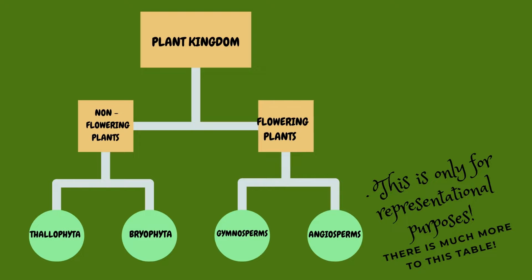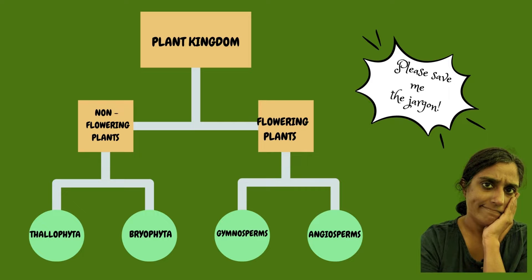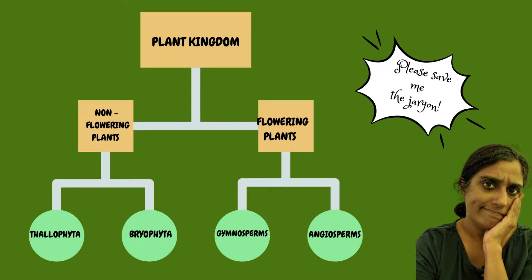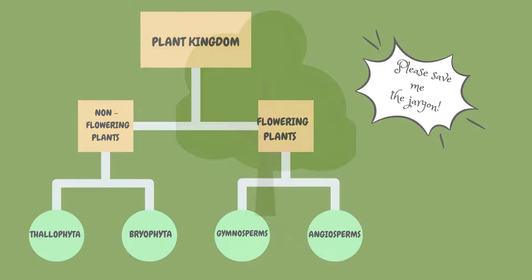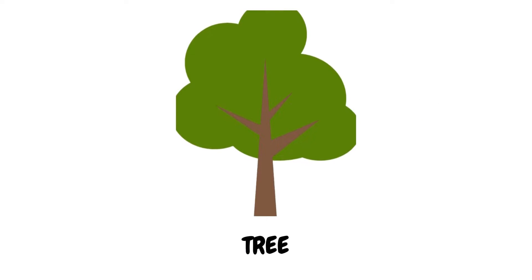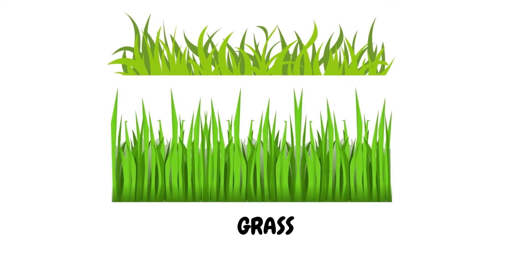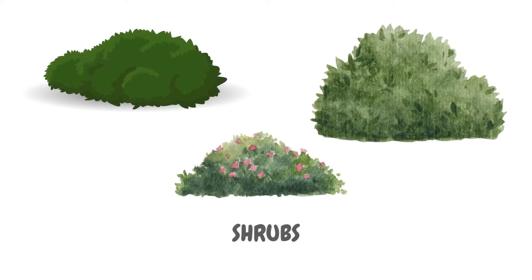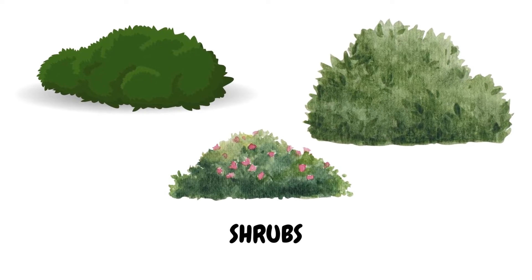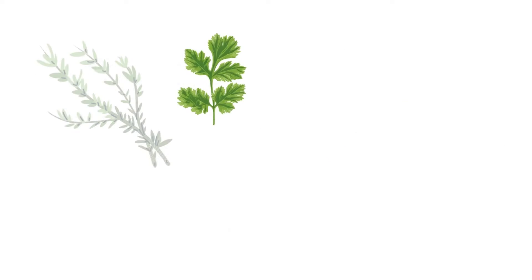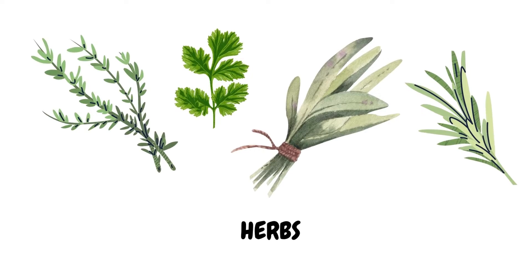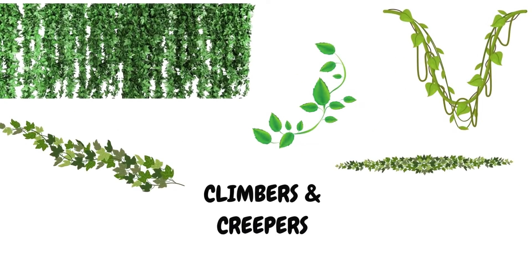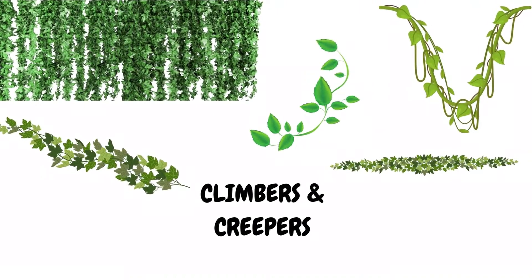The plant kingdom, as you have perhaps studied back in school, is classified into several categories. Now, I don't intend to get into all that jargon here, but even in day-to-day language, don't we classify plants in groups? For instance, we would all call this a tree, and this is grass. These are shrubs or bushes, while these are herbs that can be found in our kitchens. And then you have climbers and creepers that grow on trees or walls with support.